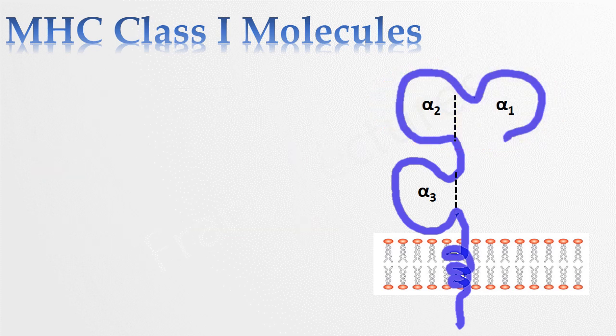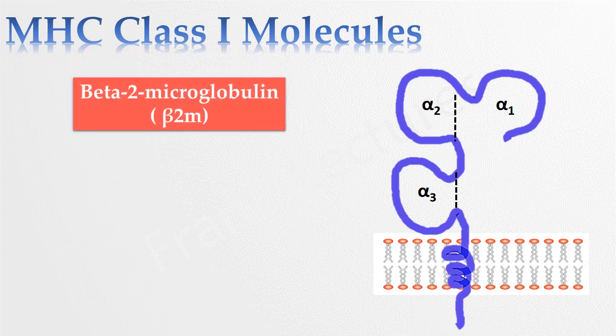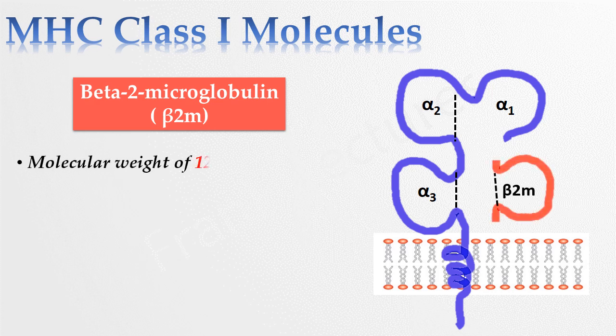Now let's talk about the second polypeptide of the class 1 molecule which is beta-2-microglobulin. Beta-2-microglobulin has a molecular weight of 12 kilo Daltons. It is encoded by a single gene on chromosome 15. It is similar in size and organization to alpha 3 domain.